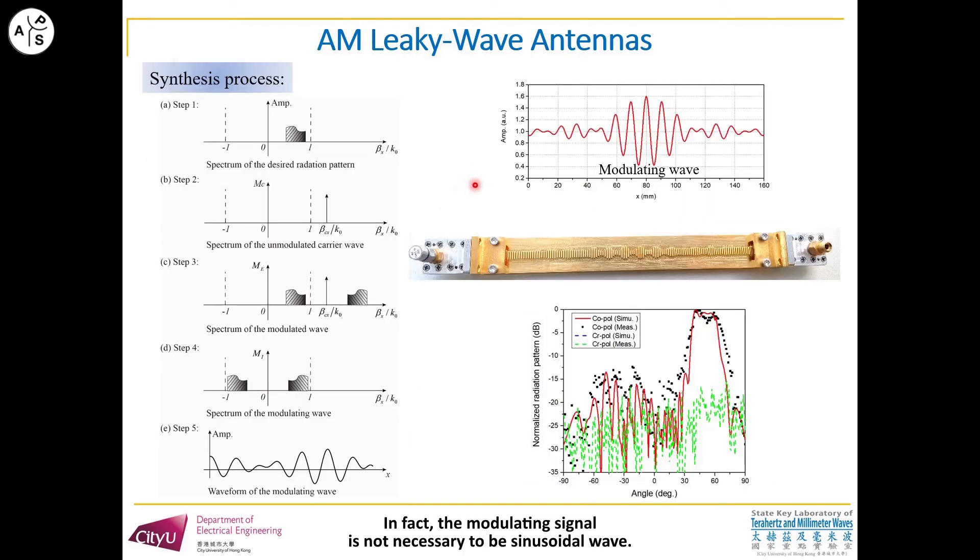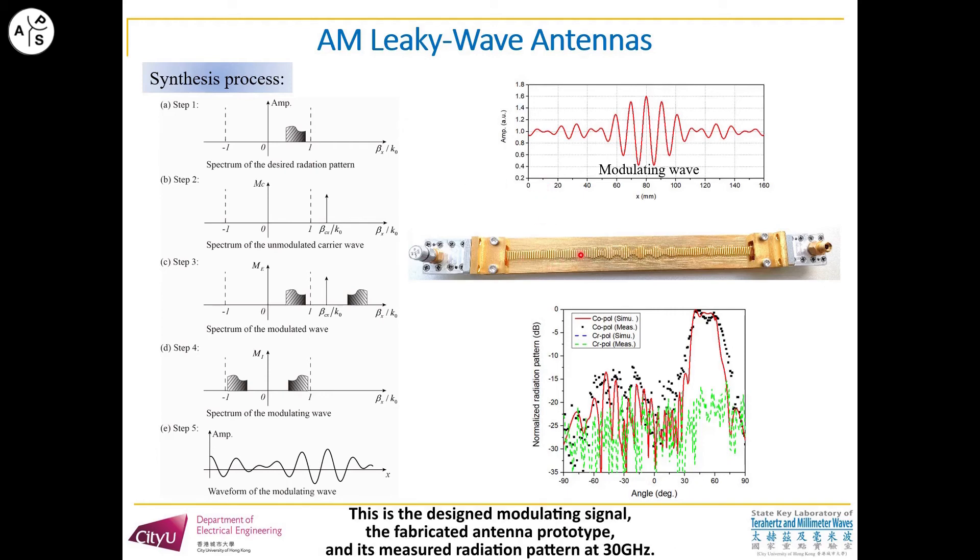In fact, the modulated signal is not necessary to be a sinusoidal wave. Here we also use the spoof SPP transmission line as an example to synthesize a flat-top radiation pattern. This is the designed modulated signal, the fabricated antenna prototype, and its measured radiation pattern at 30 GHz.